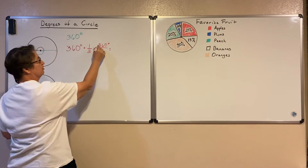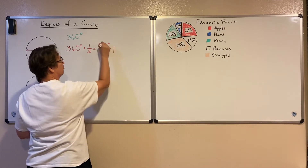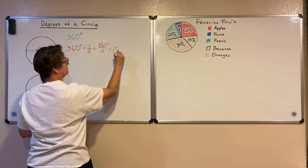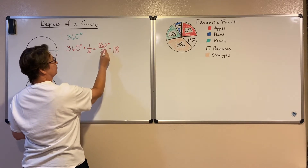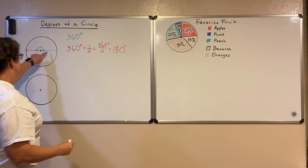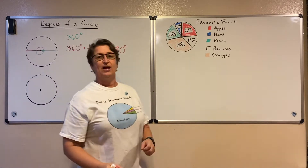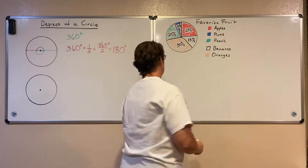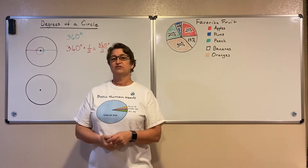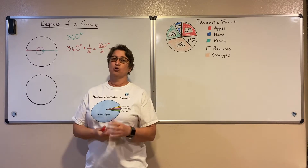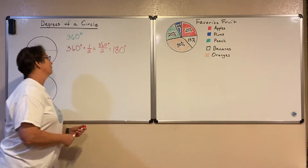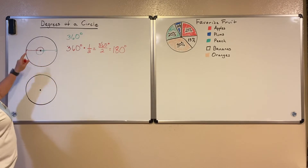2 goes into 3 one time with one left over, 2 goes into 16 eight times, 2 goes into zero zero times. So if I just go halfway around I've done a 180. If you ever hear someone flip their position on something and they say they've done a 180, it means they've gone halfway around the circle facing the other direction.